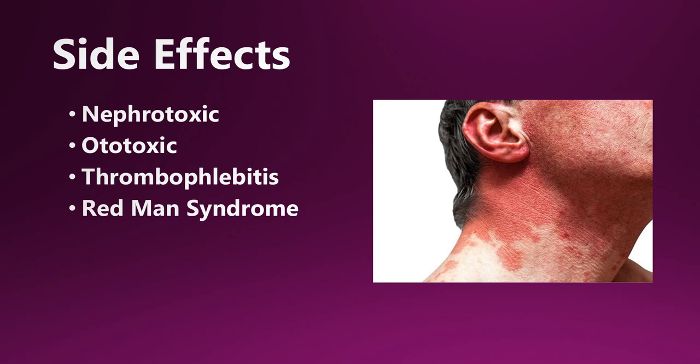In terms of side effects, there's a couple. It's nephrotoxic, so it can be damaging to the kidneys. It's ototoxic, damaging to the ears and hearing. Thrombophlebitis and Redman syndrome. The nephrotoxicity and ototoxicity were mostly seen with early impure forms of vancomycin. Now we've gotten more pure forms and we're not seeing it as much, but it's still something you need to know for Level 1 and Step 1.